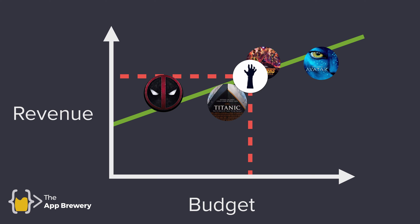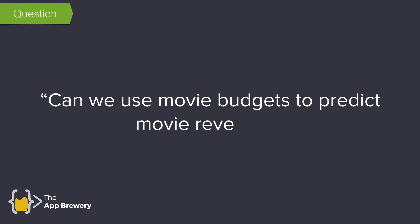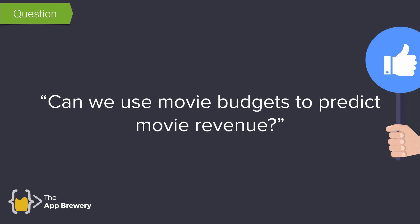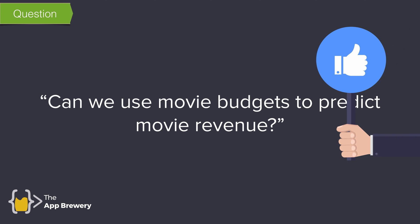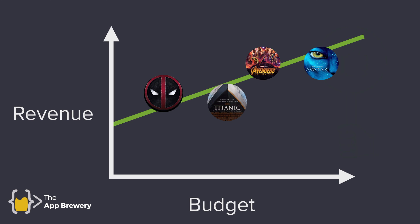So let's go back to our original question and make it a little more specific: can we use movie budgets to predict movie revenue? Now that's already a much better question. Why? Because it's testable — we can actually check if there is a relationship between movie budgets and movie revenue. This is something we can measure using data and linear regression.